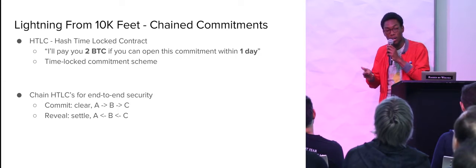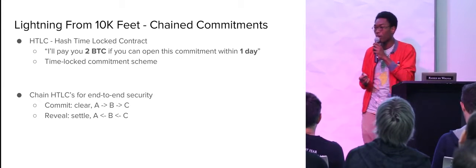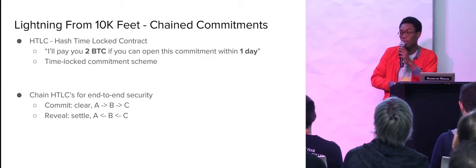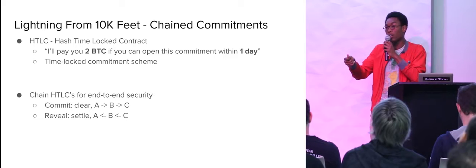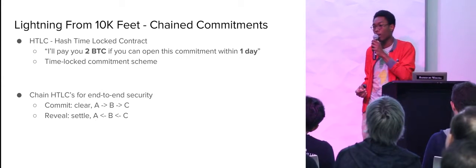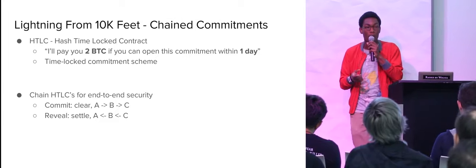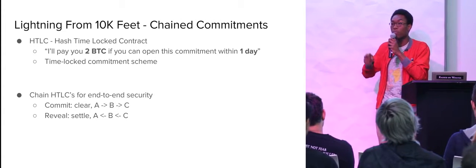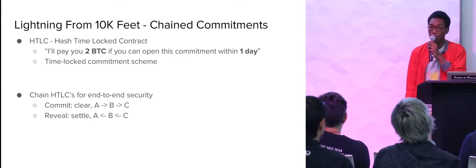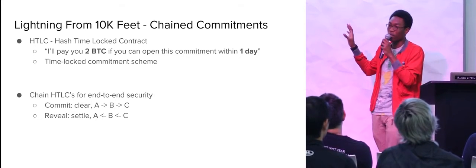That's how we handle the bidirectional payment channel aspect, which allows both sides to send money back and forth. One of the main things is the concept of the HTLC — the hash time lock contract. What an HTLC says is basically: I'll pay you two bitcoin if you can open this commitment within one day. Previously, people tried to solve this with time lock encryption, where Alice would encrypt the pre-image such that Bob, if grinding for two days, could decrypt it. But with Bitcoin we have time-based opcodes, so we can use those directly in the system. We don't need to rely on dubious time lock encryption that may not actually exist.